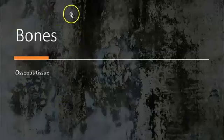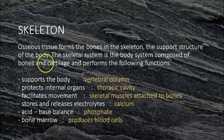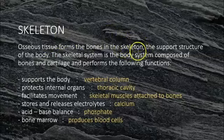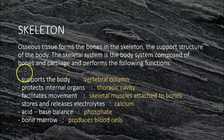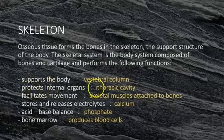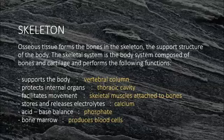Bones and bone tissue, when put together as skeletal tissue, form bones, and when all the bones are assembled, you get the skeleton. It has several functions: first, support — your whole body is supported by the vertebral column and limbs. Next is protection; for example, the thoracic cavity protects your heart, and the skull protects the brain.